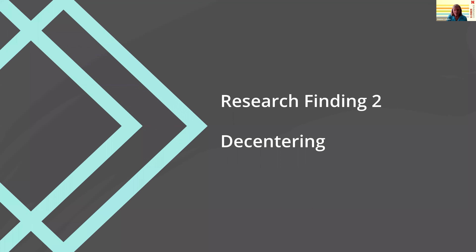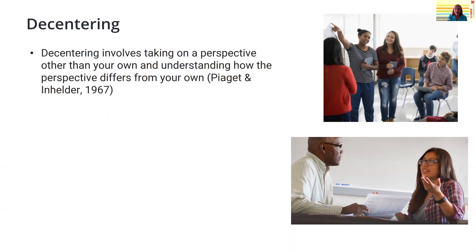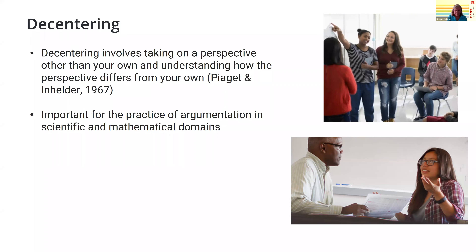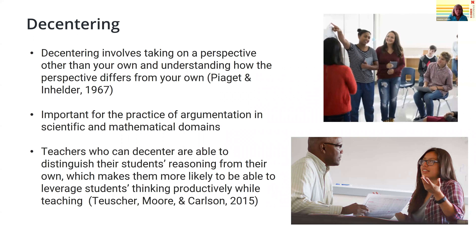The second research finding comes from another dissertation by C. David Walters. He worked with undergraduate math majors, and one finding had to do with decentering. Decentering is a Piagetian notion that involves taking on a perspective other than your own — in particular, understanding how someone else's perspective differs from your own. This is really important for the practice of argumentation in scientific and mathematical domains. Tournier et al. also comment on how it's important for teachers: those who can decenter are able to distinguish their students' reasoning from their own, making them more likely to leverage students' thinking productively while teaching.